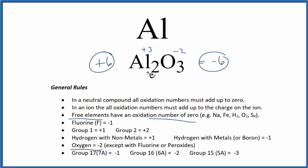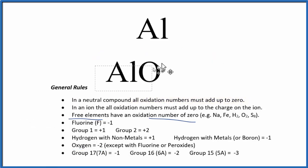Let's take a look at another one. Here we have aluminum oxide, AlO. We said oxygen is always going to be minus two. So here, aluminum has to be plus two. In this case, aluminum has a plus two oxidation number.